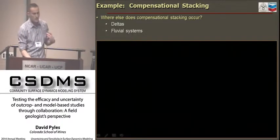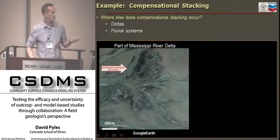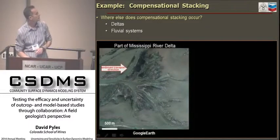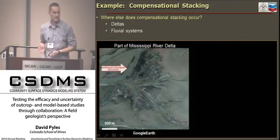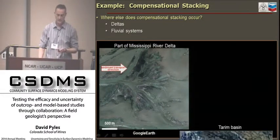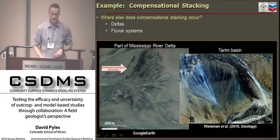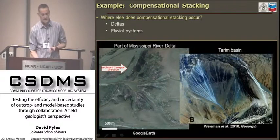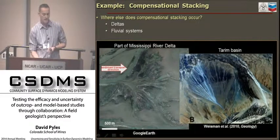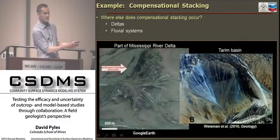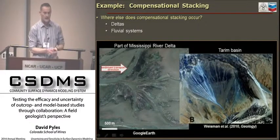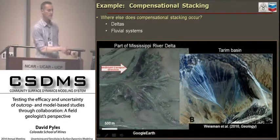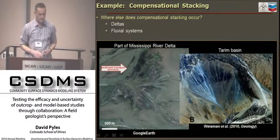Where else does compensational stacking happen? It happens in deltas. Shown here is an offshoot of the Mississippi River delta in which compensational stacking is certainly part of that system. Other systems are alluvial fans, or what Gary Wiseman would call distributive fluvial systems. This is a Landsat image where the darker colors show an older part of the fan that's no longer active, whereas the cooler colors are the modern active part. It shifted from right to left through time, building a broad radially dispersive pattern.